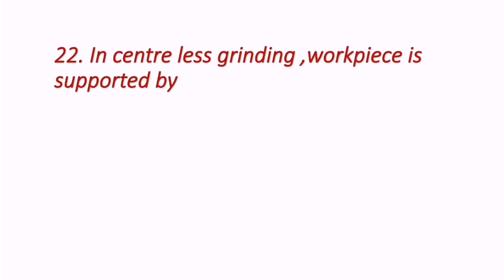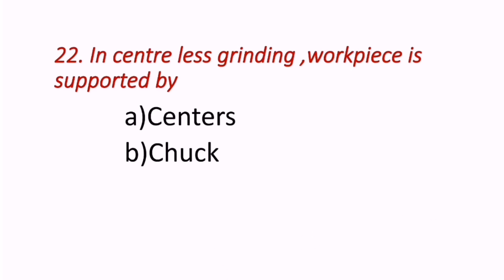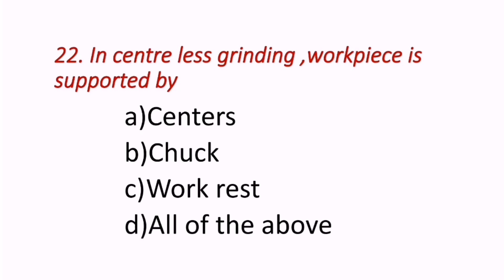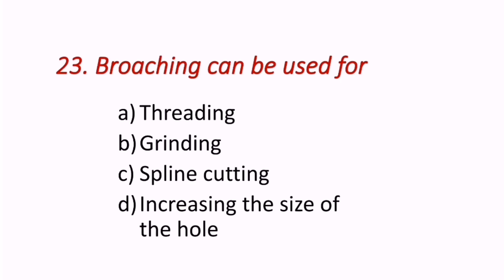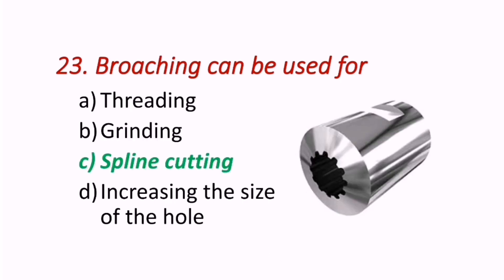Twenty-second question: In centerless grinding, the work piece is supported by? The correct answer is C — work rest. The work piece in centerless grinding is supported by a work rest. Twenty-third question: Broaching can be used for? The correct answer is spline cutting. Broaching can be used for spline cutting, as seen in the figure showing the spline shaft.